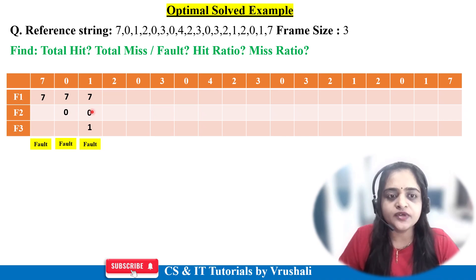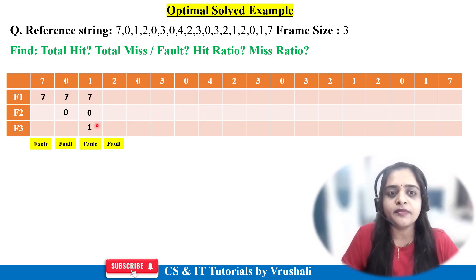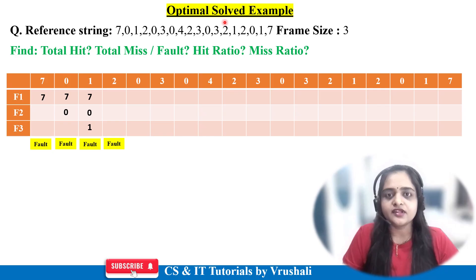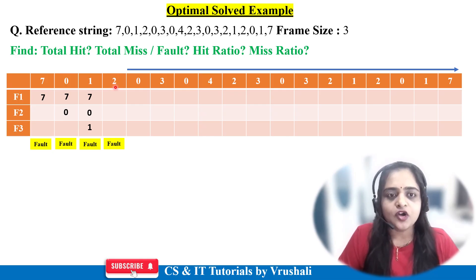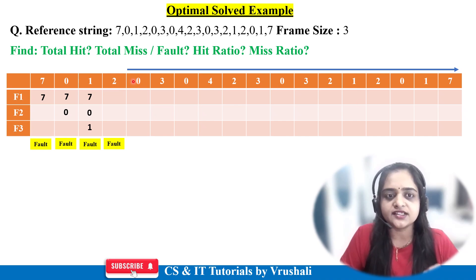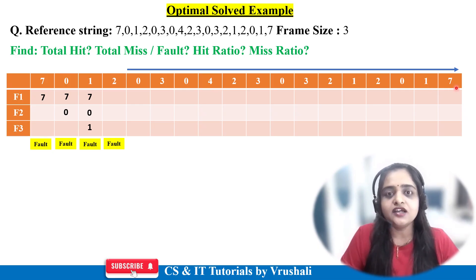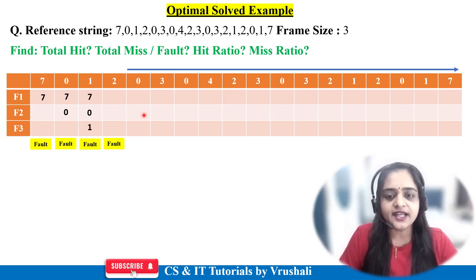Next, page 2 is demanded — not present in main memory, so page fault. Now this RAM is full; there is no space for page 2. So the optimal page replacement algorithm concept is applied, which works on future page references. The operating system wants to add page 2. Currently frames hold pages 7, 0, and 1. Check the future reference string after page 2: 0 is there, then 1, and lastly 7. So page 7 will be used last, meaning you replace page 7 with page 2 and keep the remaining pages as they are.